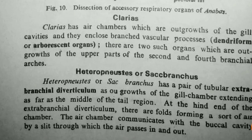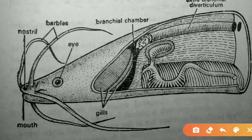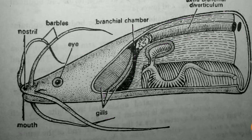The dissection diagram of Heteropneustis shows the extra-branchial diverticulum extending like a pipeline toward the tail, the branchial chamber, mouth, nostrils, barbels, and eyes. In practical exams, using correct terminology and clear markings on diagrams is very important, even if the diagram itself is basic.